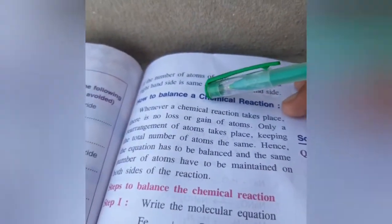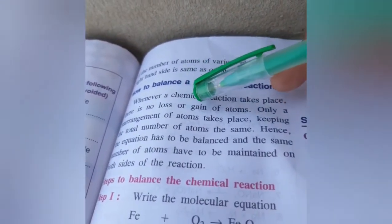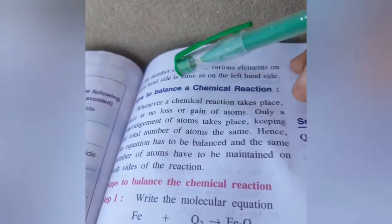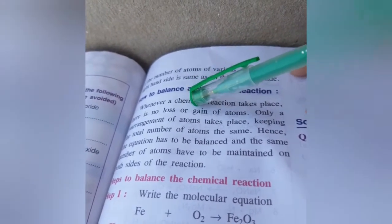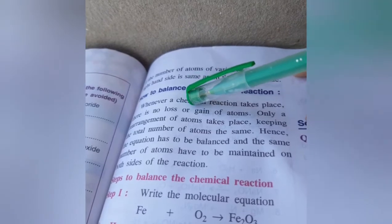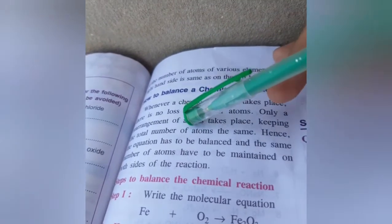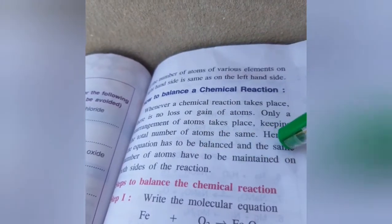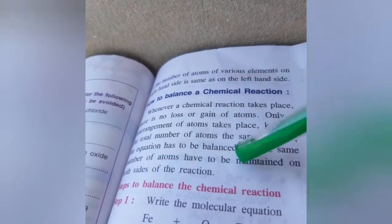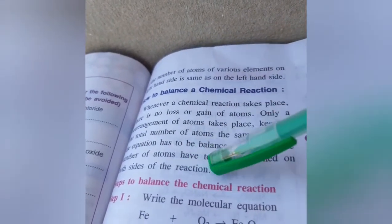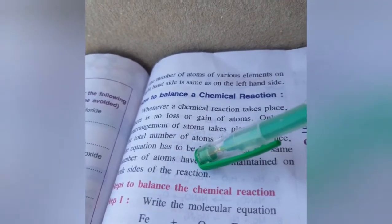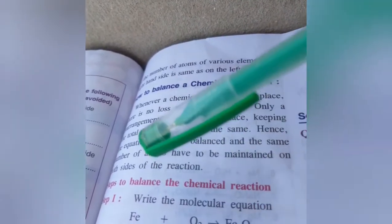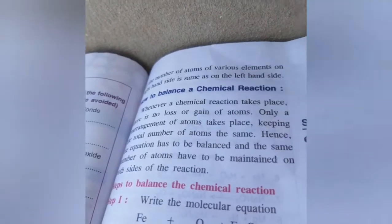Whenever a chemical reaction takes place, there is no loss or gain of atoms, only rearrangement of atoms takes place. The number of atoms are the same, hence the chemical equation has to be balanced and the same number of atoms have to be maintained on both sides of the reaction to satisfy the law of conservation of mass.